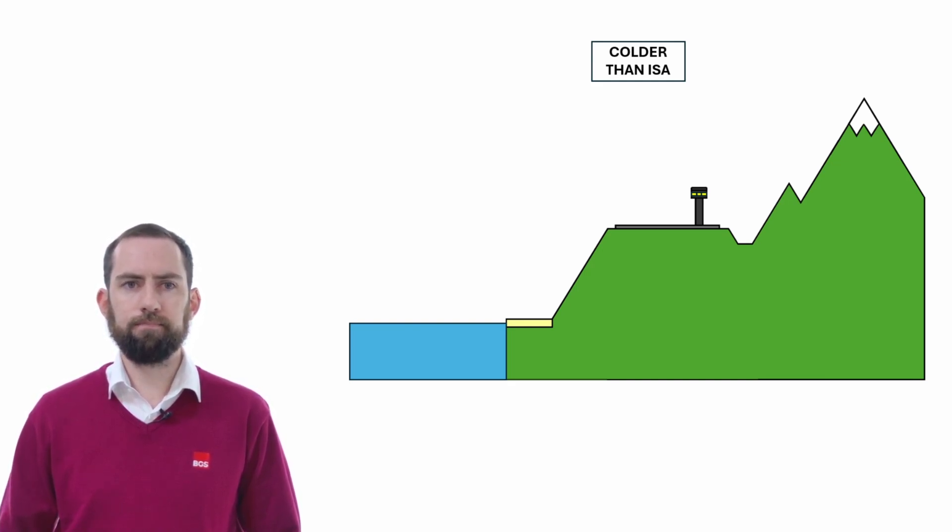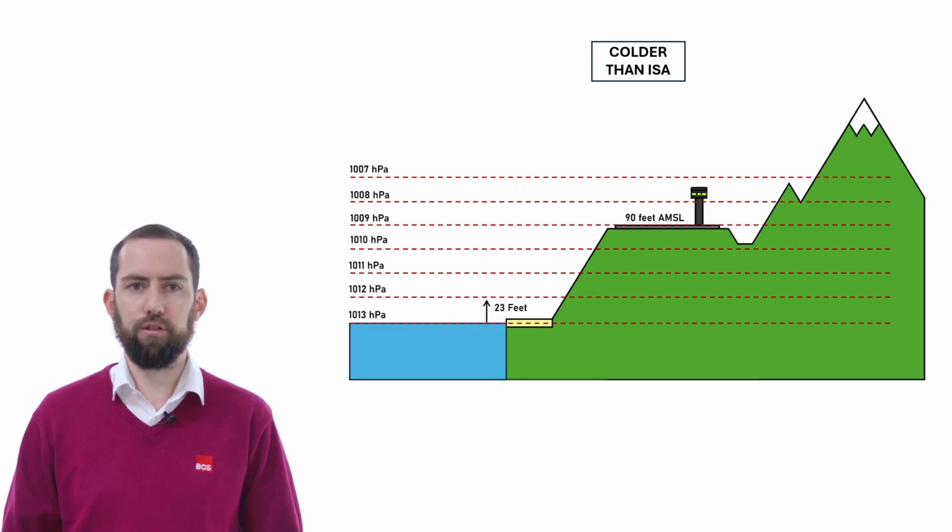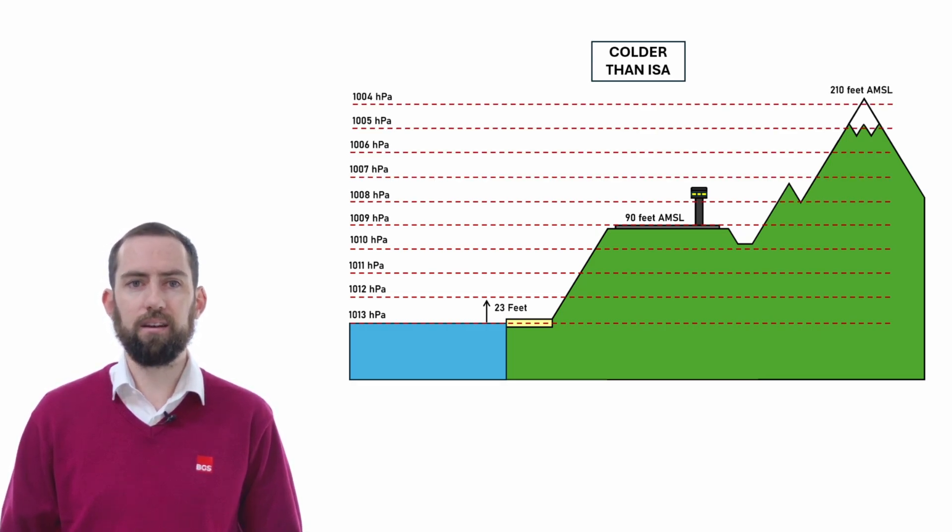The diagram, this diagram shows what the atmosphere would look like in colder than ISA conditions, where the pressure falls off quicker with height. You can see now the spacing between the pressure planes is now 23 feet instead of 30 feet. Keep in mind that I am exaggerating all of these figures for the sake of the exercise.